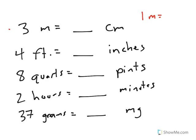I know that in 1 meter, there are 100 centimeters. So now if I have 3 meters, that would mean 3 times 100 or 300 centimeters.